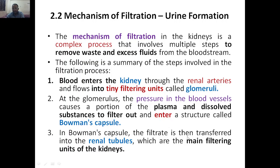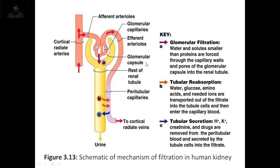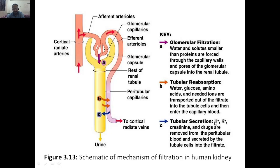In the Bowman's capsule, the filtrate is then transferred to the renal tubules, which are the main filtering units of the kidneys. This is the glomerular capsule, or Bowman's capsule. Water and solutes smaller than proteins are forced through the capillary walls and into the renal tubule. Blood enters the glomerulus, filtration occurs, the excess is removed, and then it enters the rest of the renal tubule where tubular reabsorption and tubular secretion take place.